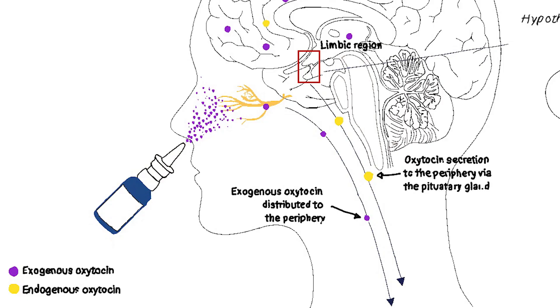As a quick aside on methodology: intranasal oxytocin is the preferred method of administration because oxytocin delivered orally or by injection tends not to get into the brain. Other studies have shown that oxytocin also seems to increase trust and other measures of prosociality, but mainly toward members of one's in-group.